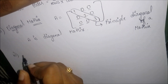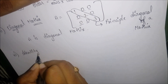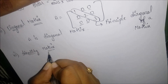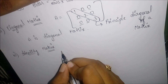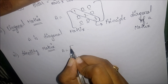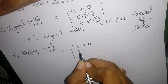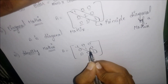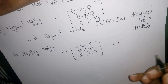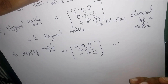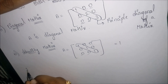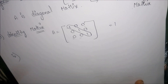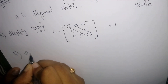Coming to the identity matrix — it is a type of diagonal matrix where the principal diagonal elements are equal to one. Such a matrix is called an identity matrix.